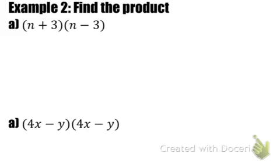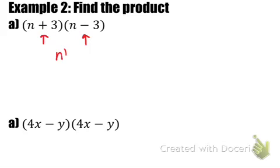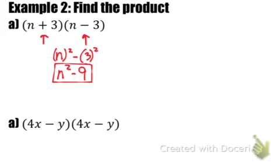Example 2: the two binomials have the same first terms and the same second terms, with only a plus and minus sign difference — so this falls into the sum and difference pattern. Multiplied out, it becomes (n) squared minus (3) squared, which gives n squared minus 9.